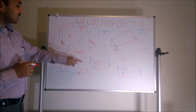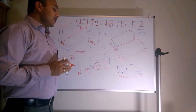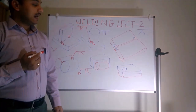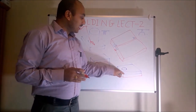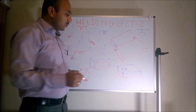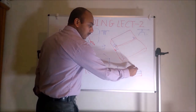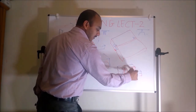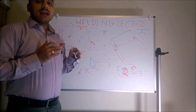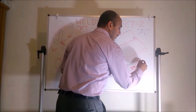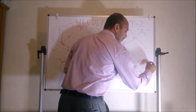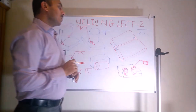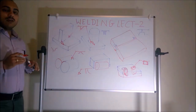Now suppose there are two plates one upon the other and we want to weld them, but we cannot prepare any edge and cannot form a gap. What we can do is prepare multiple slots on one plate and weld through them, creating connections at each slot location. This is called slot weld, and the symbol looks like a rectangular slot.